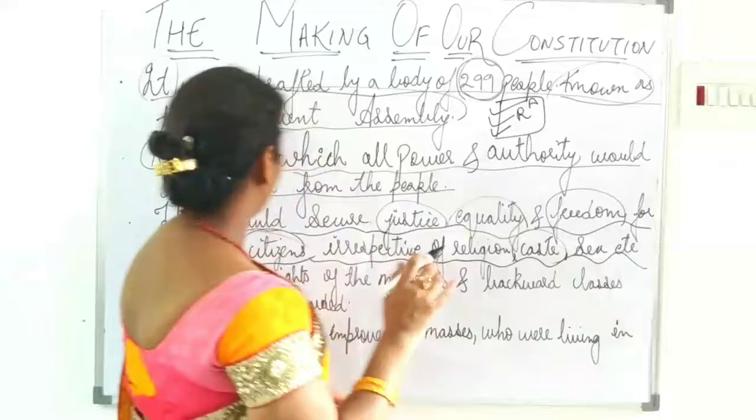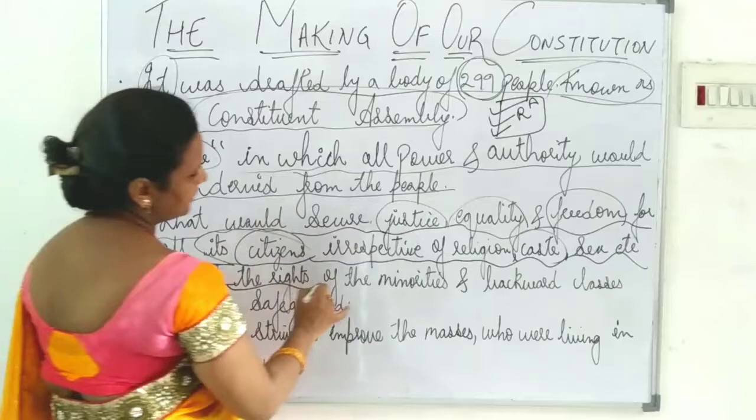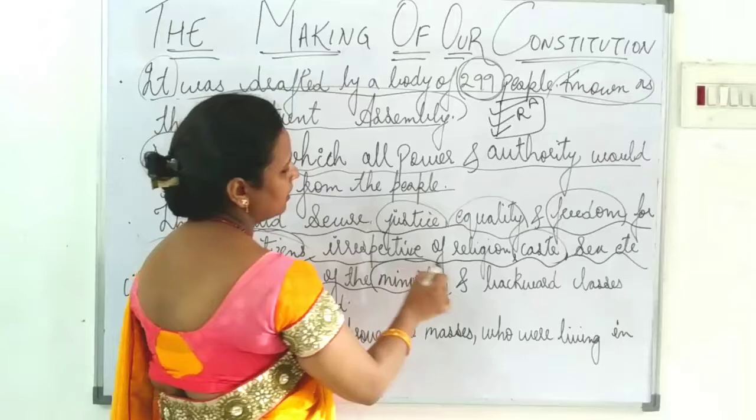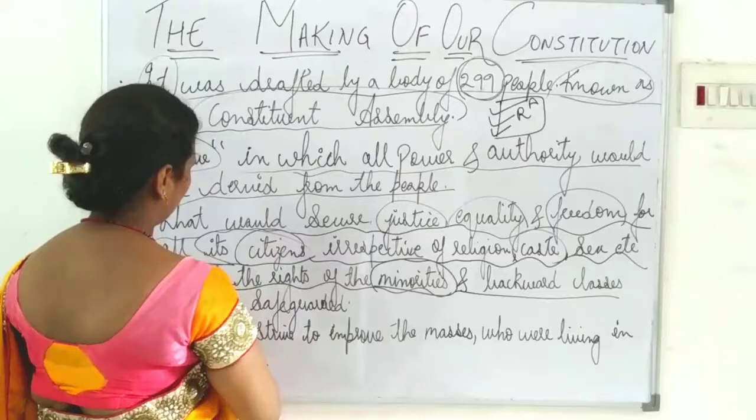Next, Nehru also said that the rights of minorities would be safeguarded. Minorities means persons who are, compared to the overall population, a smaller number — and their rights would be protected.